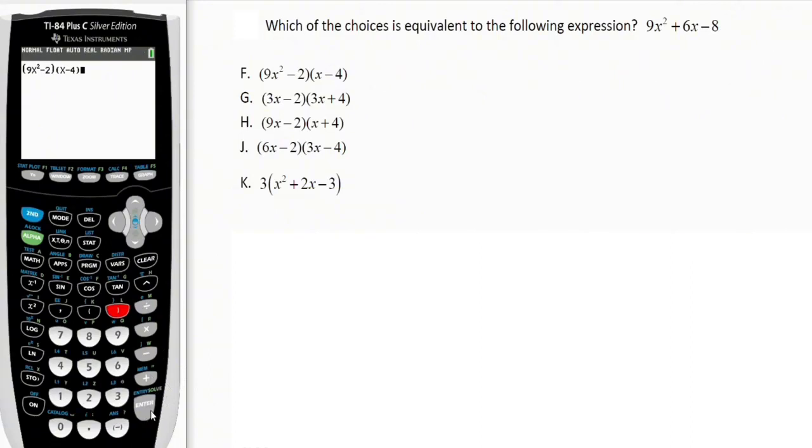Let's check option G. In brackets we have (3x - 2), close the brackets, open another brackets (3x + 4). That's it, let's press enter. 40, exactly! So the correct option is option G.